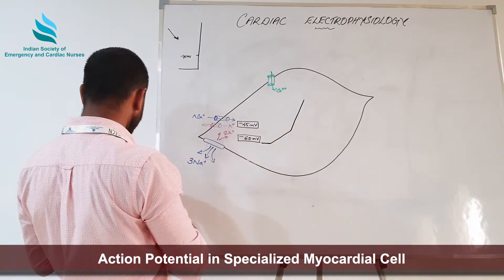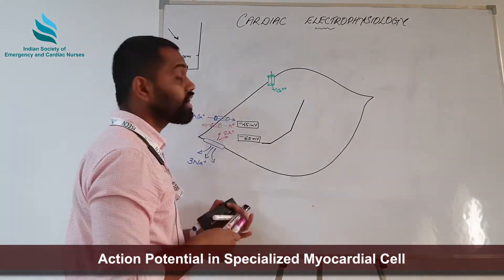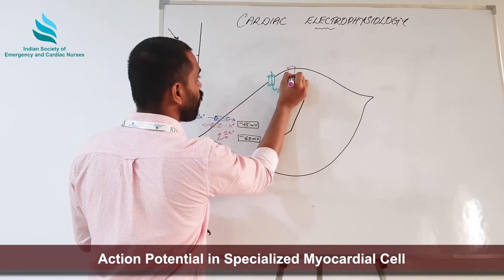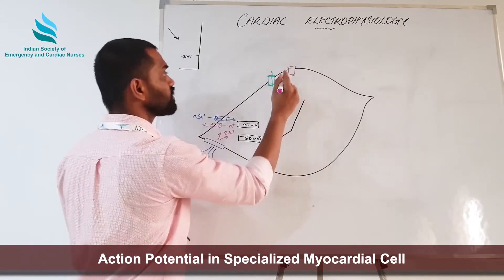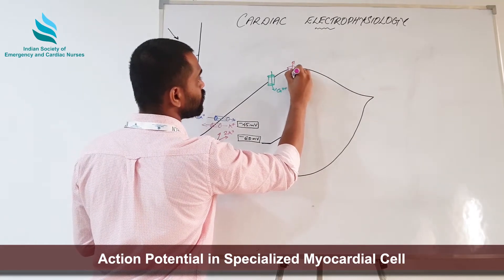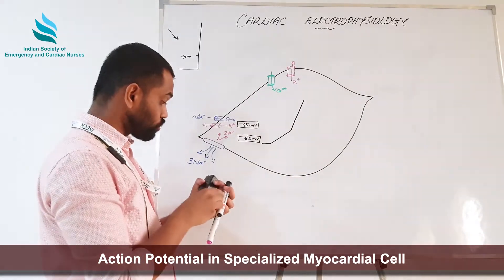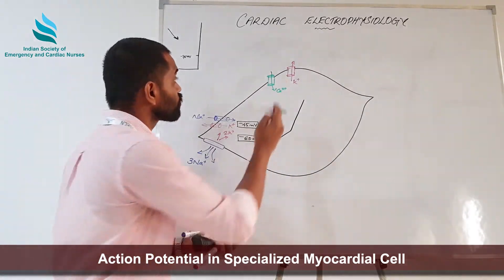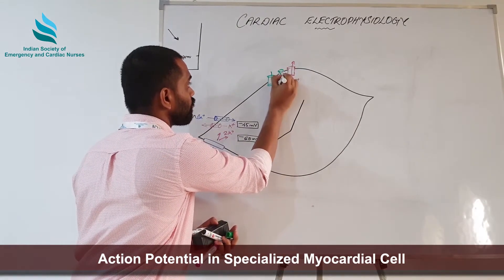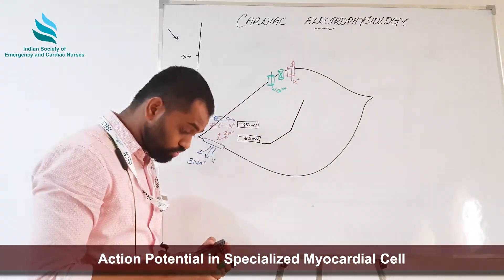As depolarization happens in SA nodal cells, the next set of channels to open are the potassium channels — voltage-gated potassium channels will open. As the voltage-gated potassium channels open, the cell will start losing potassium. We also have closure of calcium gates here.